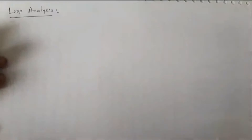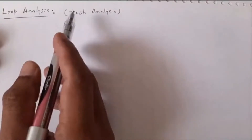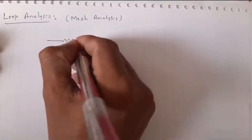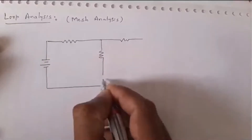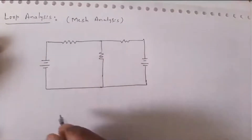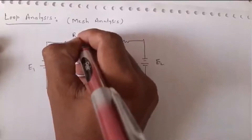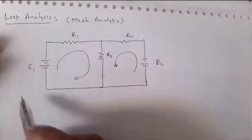In today's discussion we will start a new topic: loop analysis, sometimes also called mesh analysis. You already know the difference between loop and mesh — a loop is a closed path, whereas a mesh is also a loop but doesn't contain any other loops inside it. For example, in a simple network with two voltage sources and three resistors, this is one mesh and this is another mesh.